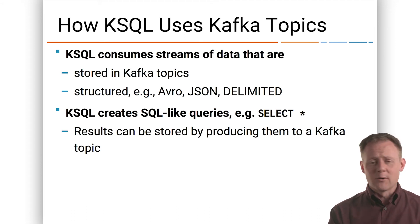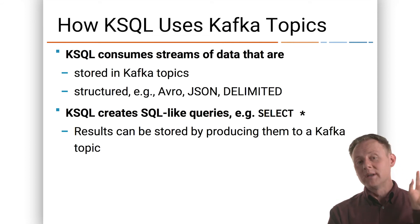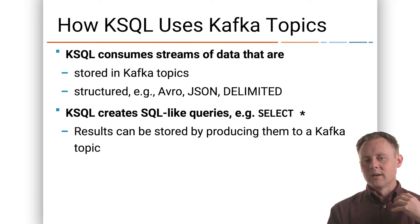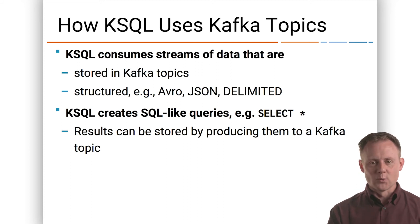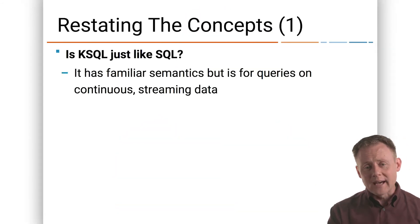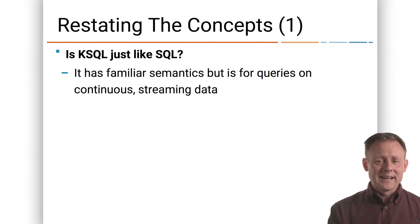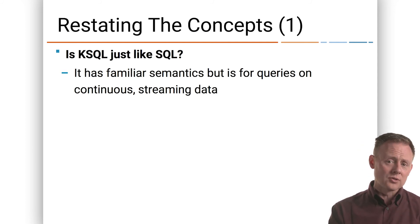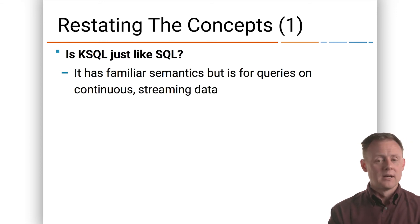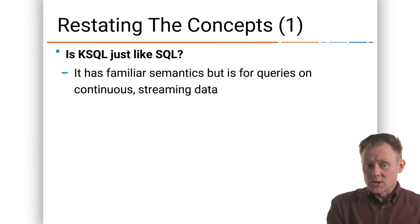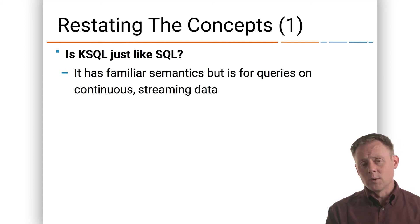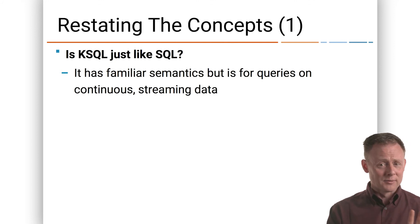For those who understand Kafka well, there's no magic going on here — we're just getting stuff out of topics, doing things to it, and putting it back into new topics in an efficient, high-productivity way with a SQL-like language. Is KSQL just like SQL? It has very familiar syntax and some familiar semantics, but it's fundamentally for queries on continuous streaming data, not relational tables. So even though it can do joins and other operations familiar from SQL, it's similar but different, and those differences are important.